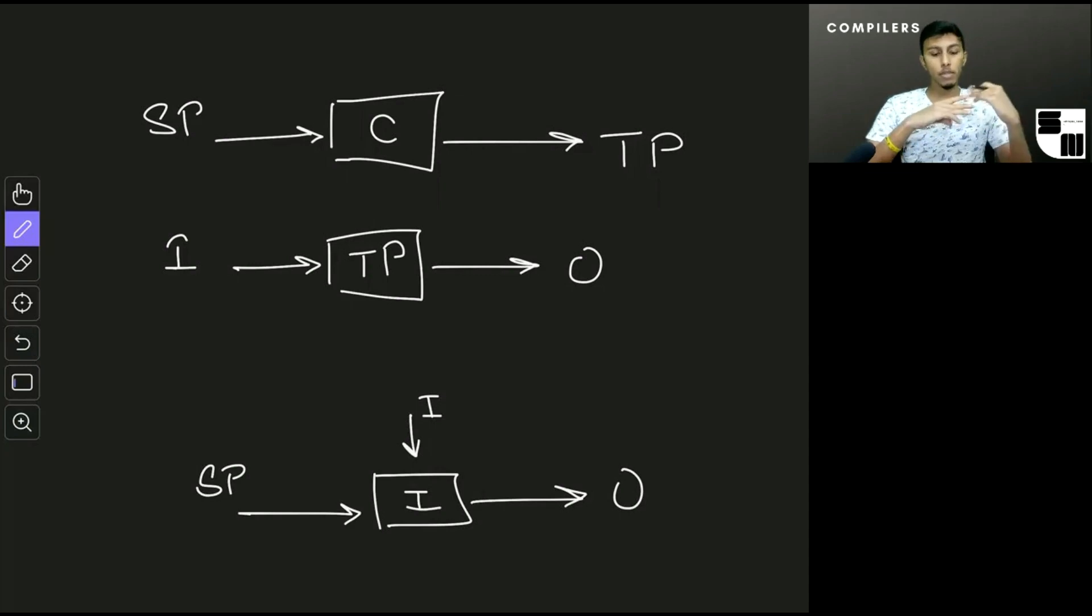So when we're discussing the advantages and disadvantages of a compiler and an interpreter, a compiler will usually run faster. Because once we have the target program, we don't need to do any of the compilation steps again and again, we can just take the input, run the target program on the input and get the output. Whereas in case of an interpreter, it would usually be slower than a compiler because it needs to do all of the compilation steps every time.